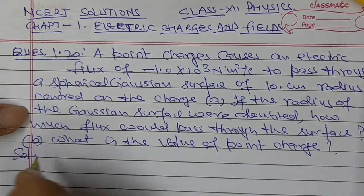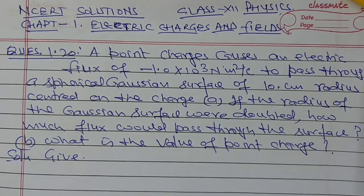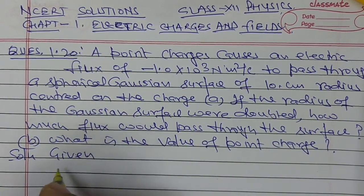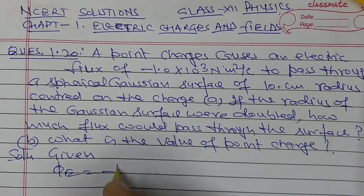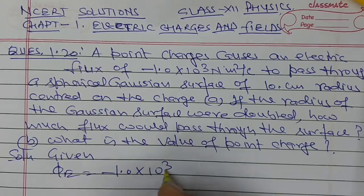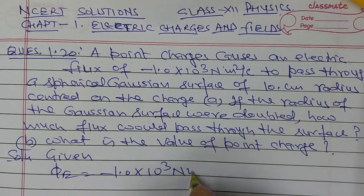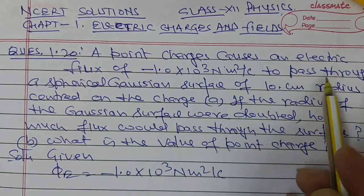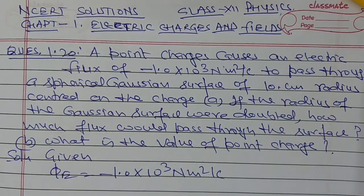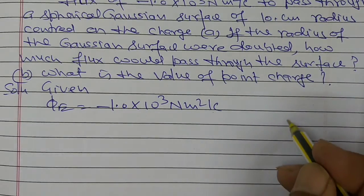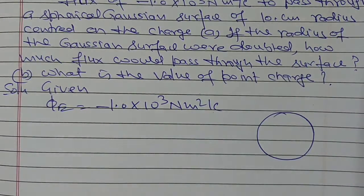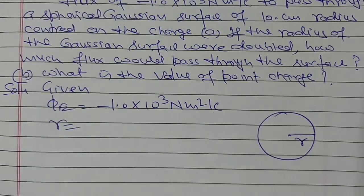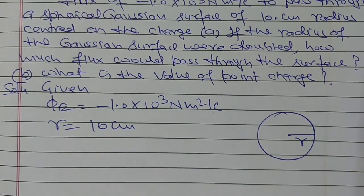In this question, given that a point charge causes an electric flux phi E equal to minus 1.0 into 10 to the power 3 newton meter square per coulomb to pass through the spherical Gaussian surface. The radius of this Gaussian surface is R, and R is equal to 10 centimeter.